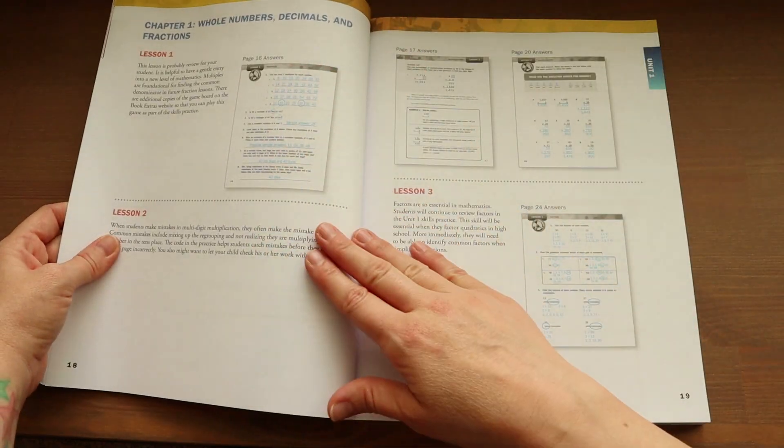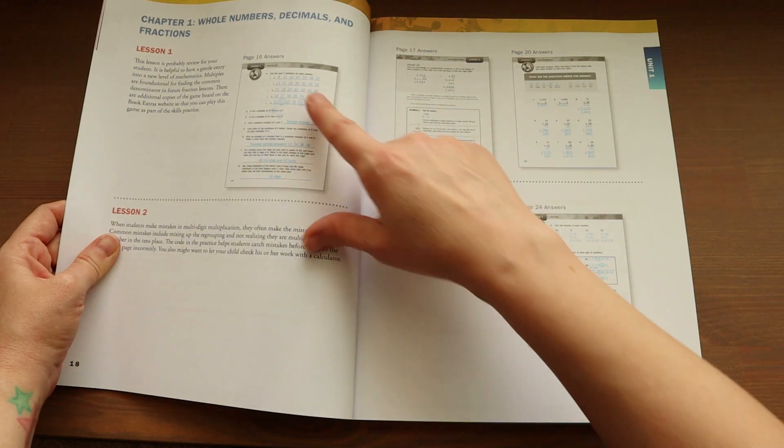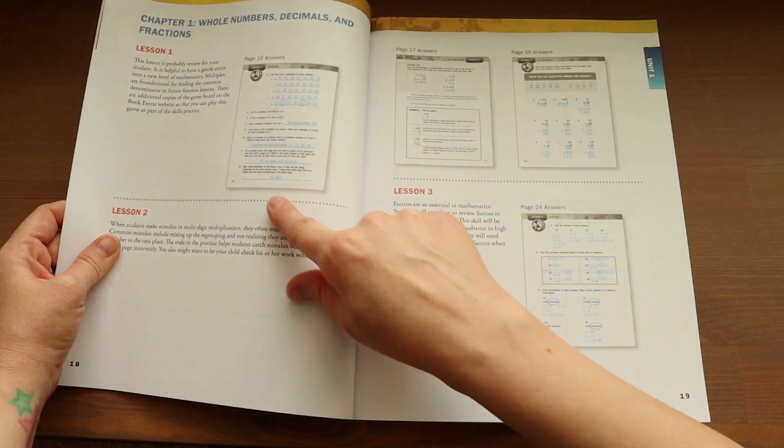And then here is what the answer key looks like. It has the picture of the page that your child will be working on with the answers in blue.